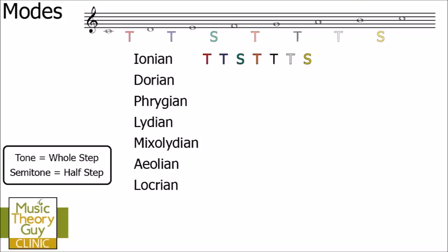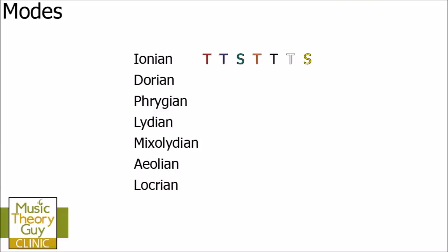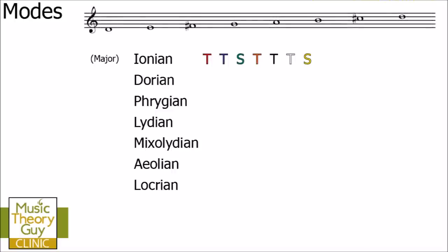Modes can start on absolutely any note of your choosing. As long as it follows tone, tone, semitone, tone, tone, tone, semitone, it's always going to be an Ionian mode. Here's Ionian on D — a mode that starts and ends on D — and it follows that same pattern of tones and semitones. If you're thinking you've come across this pattern before, you're probably right: it's actually the same pattern as a major scale. Ionian on D is exactly the same as a D major scale.